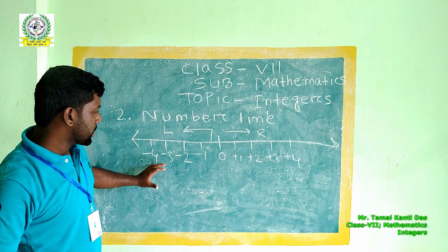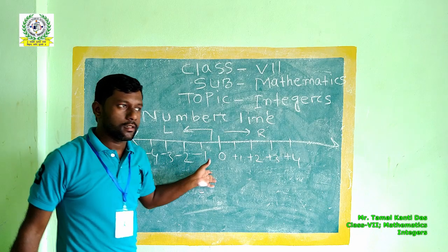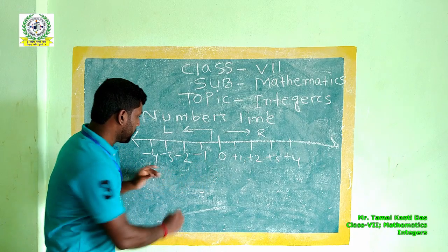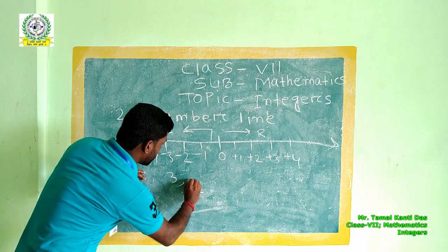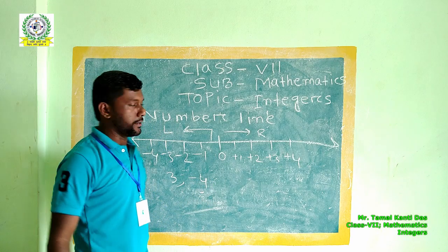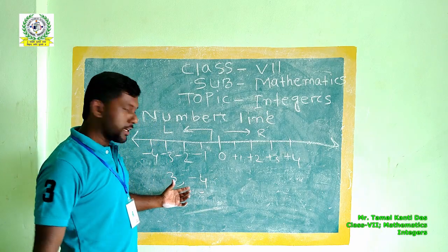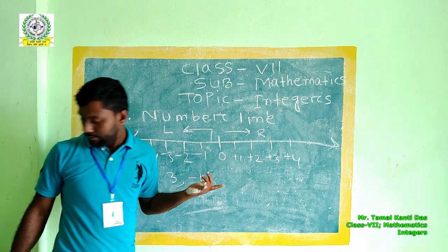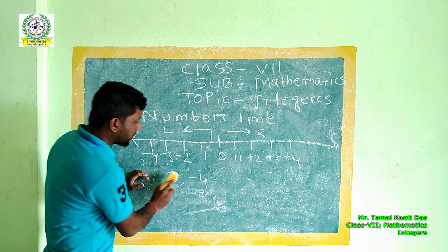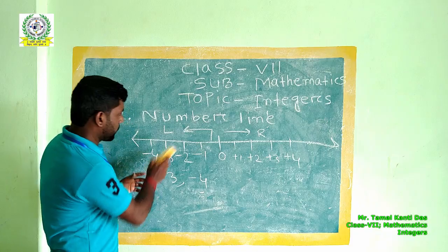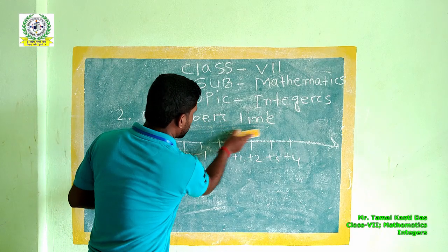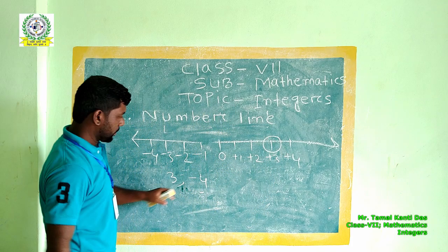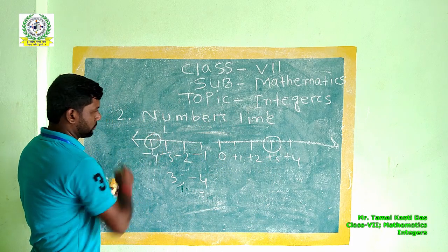With the help of this number line, we can easily represent numbers. For example, your question will come like this: Represent 3 and minus 4 on the number line. With the help of this number line, we can easily represent these two numbers. First we have to identify where is 3 and where is minus 4. This is plus 3. This is minus 4. Very simple.